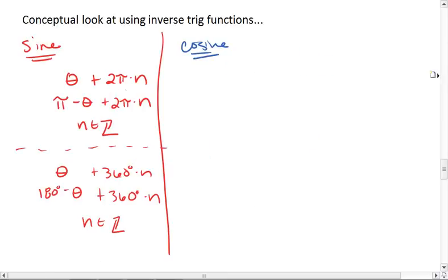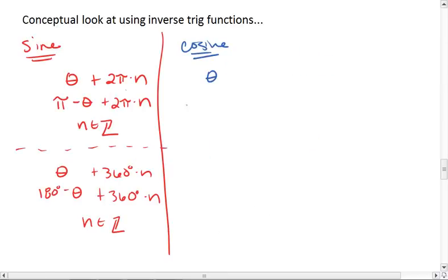Let's go ahead and write it back on this sheet. So we have theta, 2 pi minus theta, and again, we're going to add on as many complete rotations as we want to.